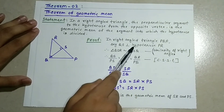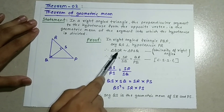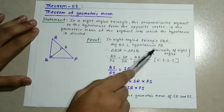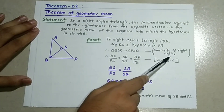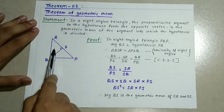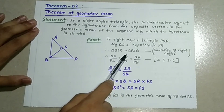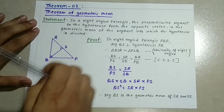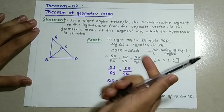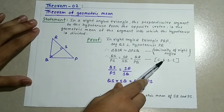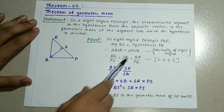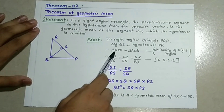So here, triangle QSR is similar to triangle PSQ. From the corresponding sides of similar triangles, we get: QS upon PS is equal to SR upon SQ.